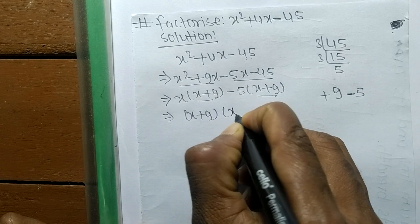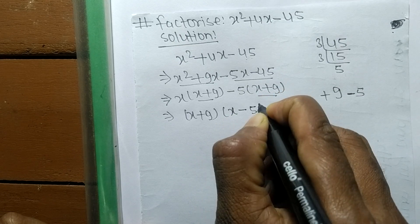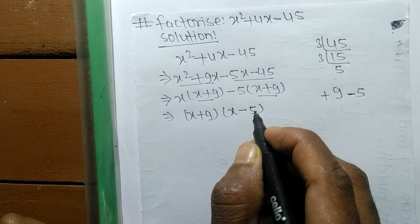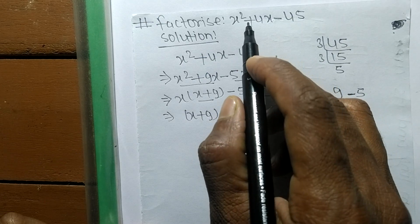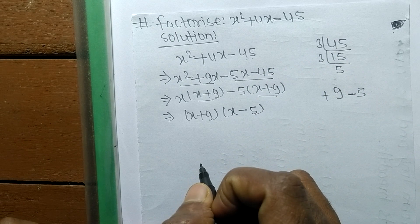The remaining in first part is x, and the remaining in second is minus 5. So x + 9 and x - 5 are the factors of x² + 4x - 45.